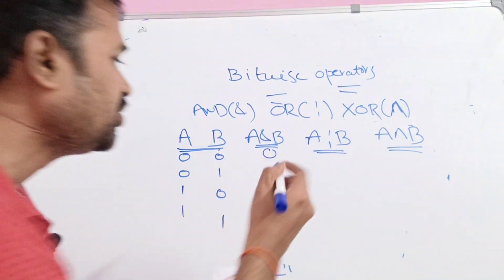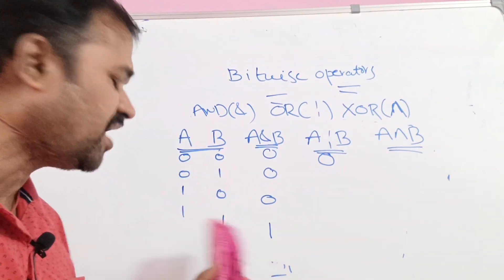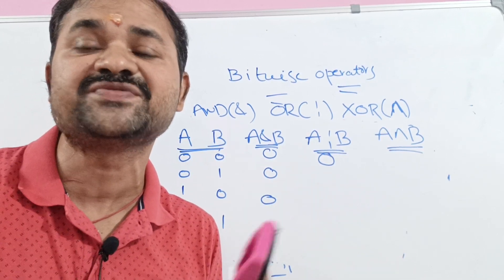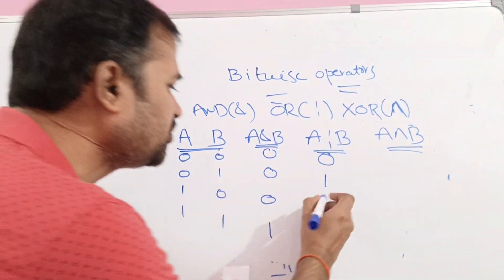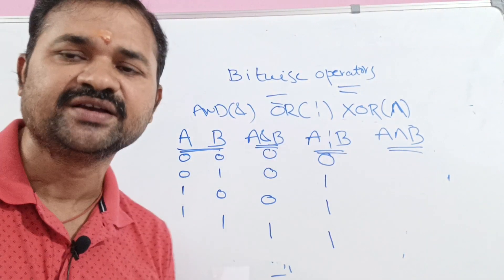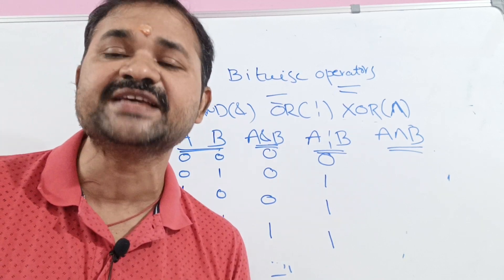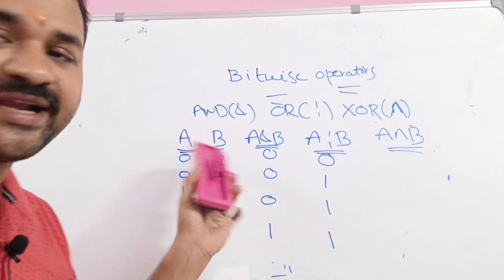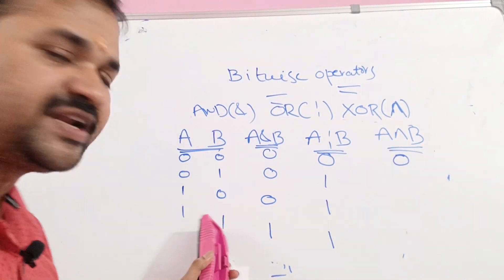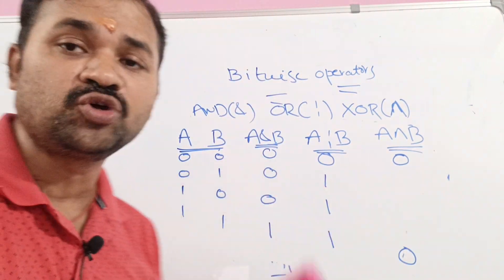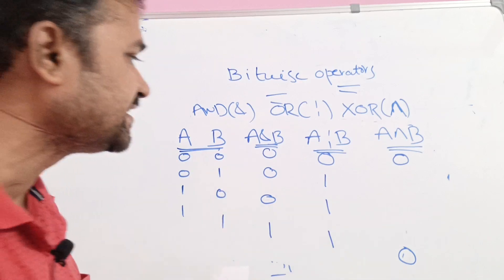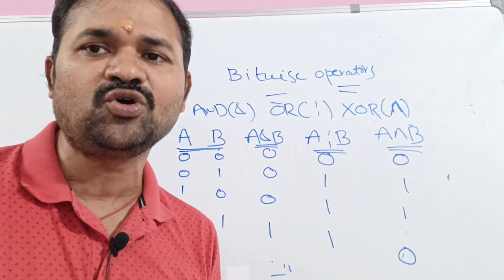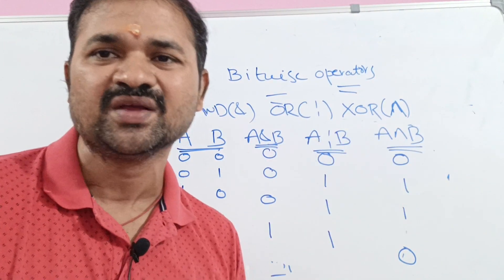For bitwise XOR (A XOR B): when both bits are the same, the result is 0; otherwise the result is 1. So 0 XOR 0 = 0 (same bits), 1 XOR 1 = 0 (same bits), 0 XOR 1 = 1 (different bits), and 1 XOR 0 = 1 (different bits).